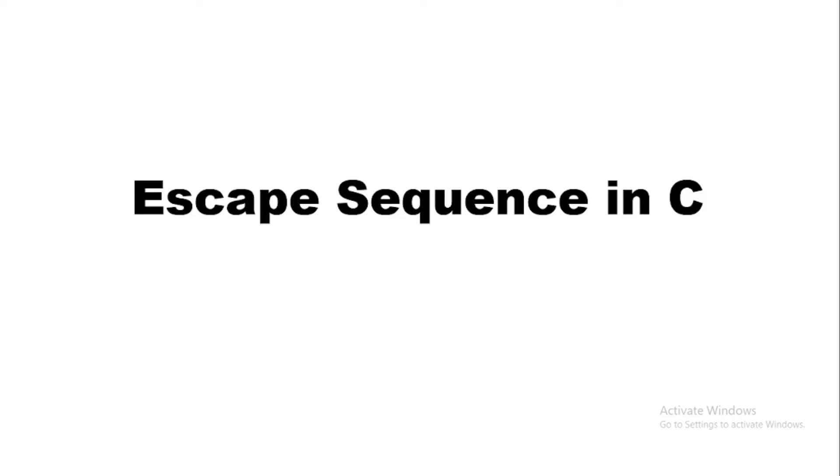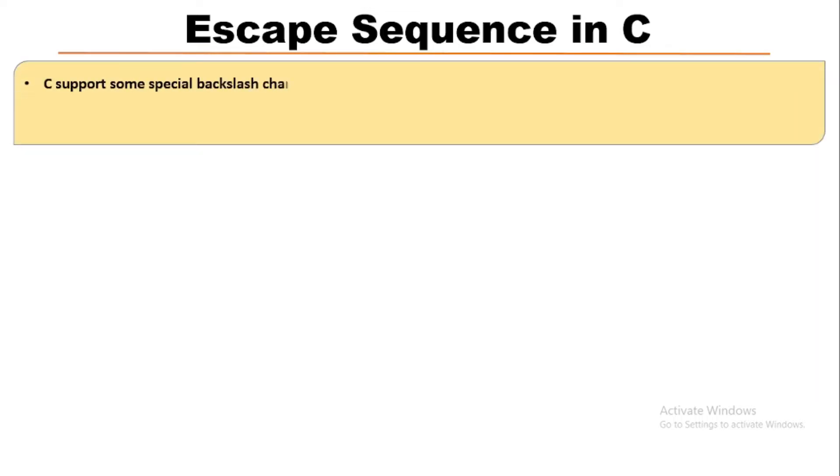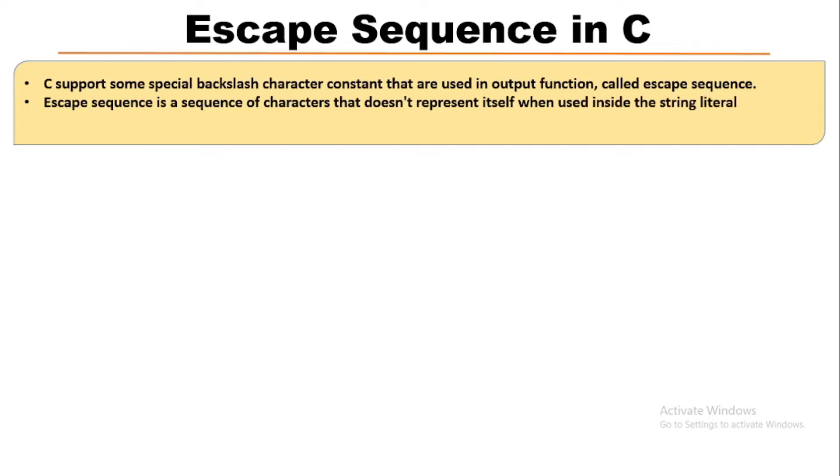In this lecture we will learn about escape sequences in C programming language. C programming supports special backslash character constants that are used in output functions, called escape sequences. An escape sequence is a sequence of characters that doesn't represent itself when used inside a string literal. It is composed of two or more characters starting with a backslash. The following table shows some escape sequences.